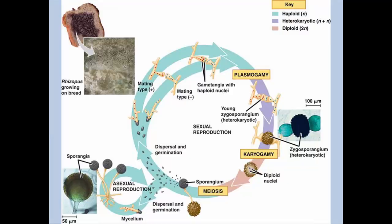If we look at the life cycle of a typical zygomycota, they have a sexual reproductive stage and an asexual reproductive stage. For the sexual reproductive stage to happen, you have to have the fusion of two different fungal bodies — two fungus individuals that grow closely together and fuse together.